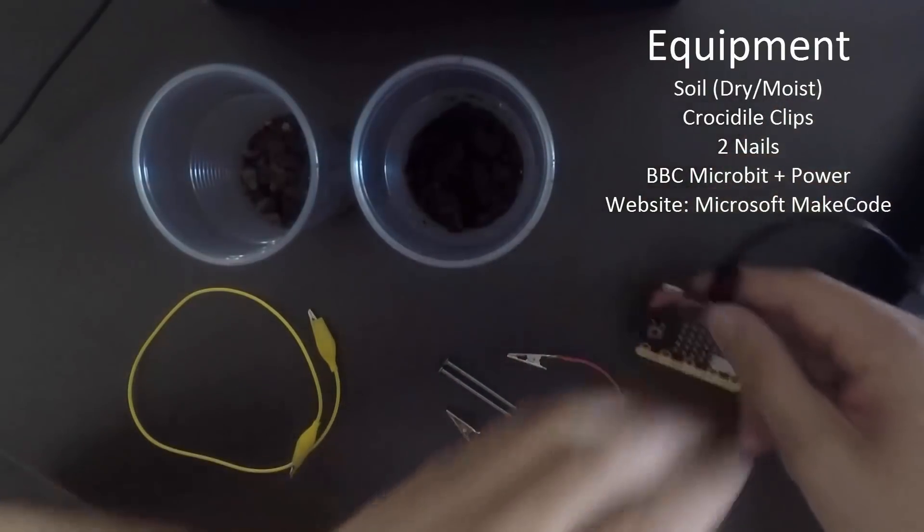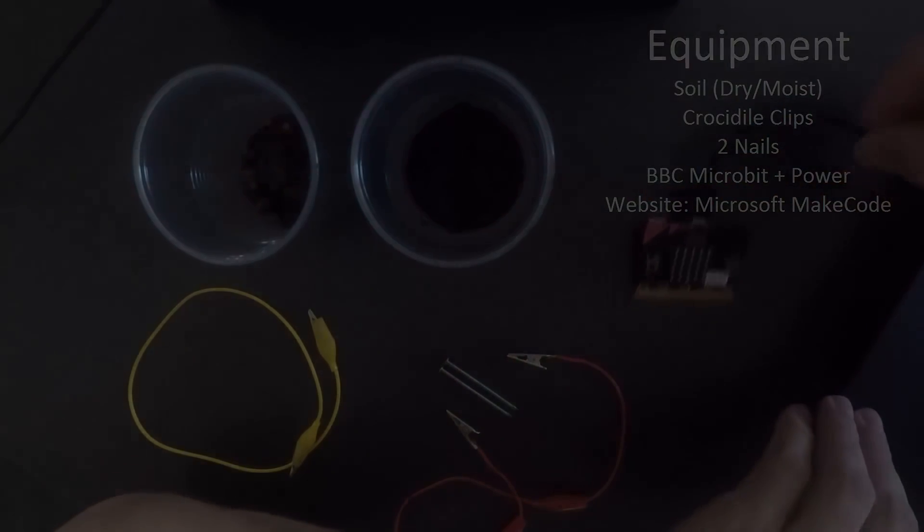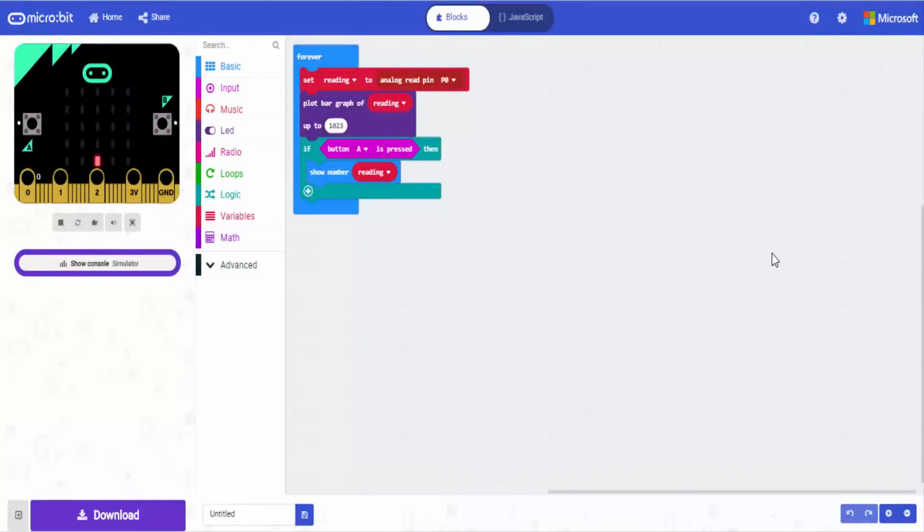The first thing we need to do is go to the BBC MakeCode website. This is the code that will create our moisture sensor. You will need to set variables such as 'reading' and set them to the analog pin of P0.